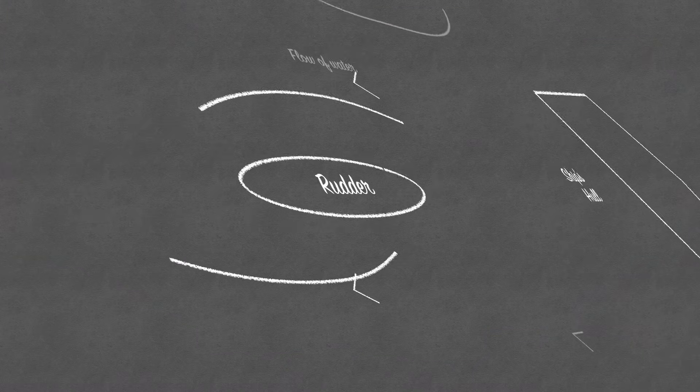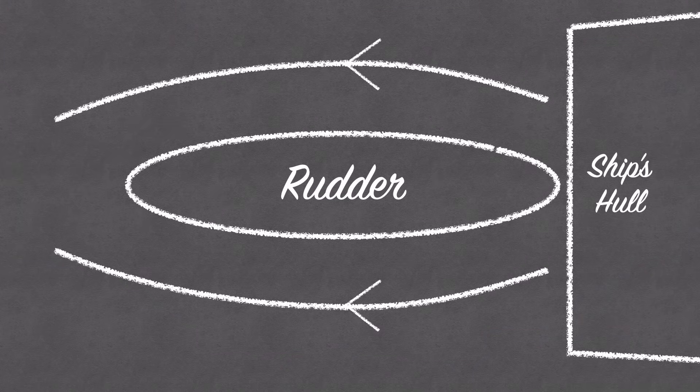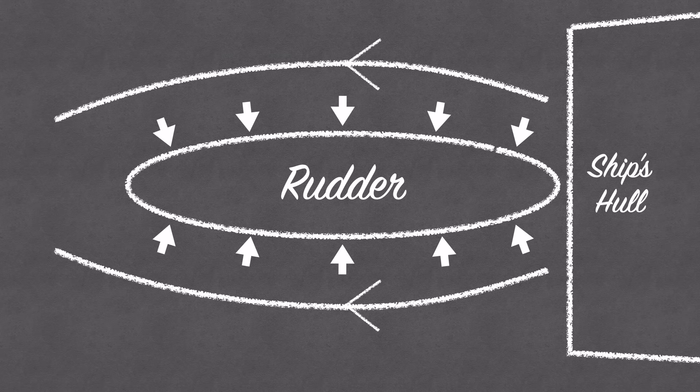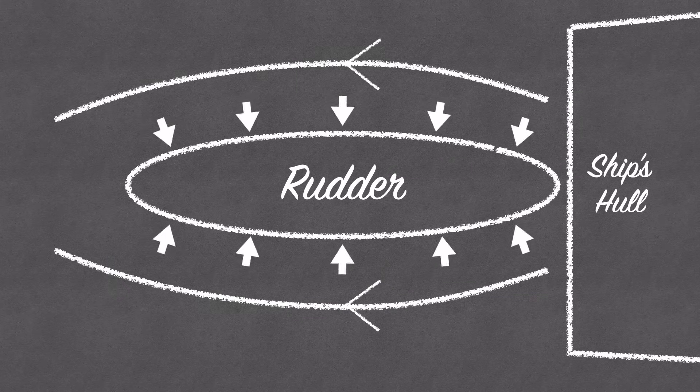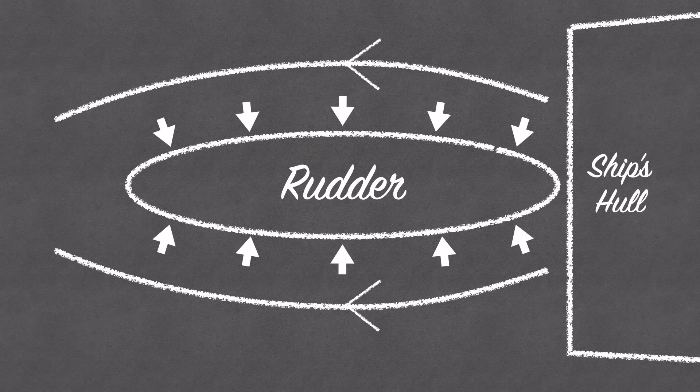Now with close attention to the rudder, as the water flows past, the water molecules interact and strike both sides of the rudder. This causes a force on both sides of the rudder, and this force increases depending upon how fast the vessel is moving.